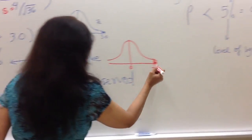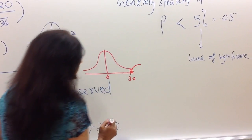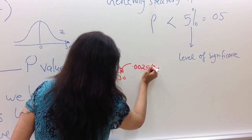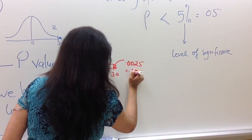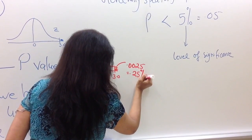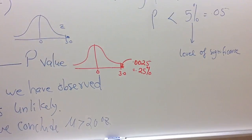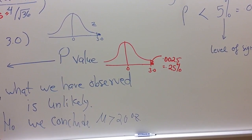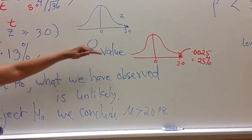From the T table, this area turns out to be 0.0025, roughly, or 0.25%. Is this probability low? Yes, it is low, lower than 5%. So our decision will still be the same.